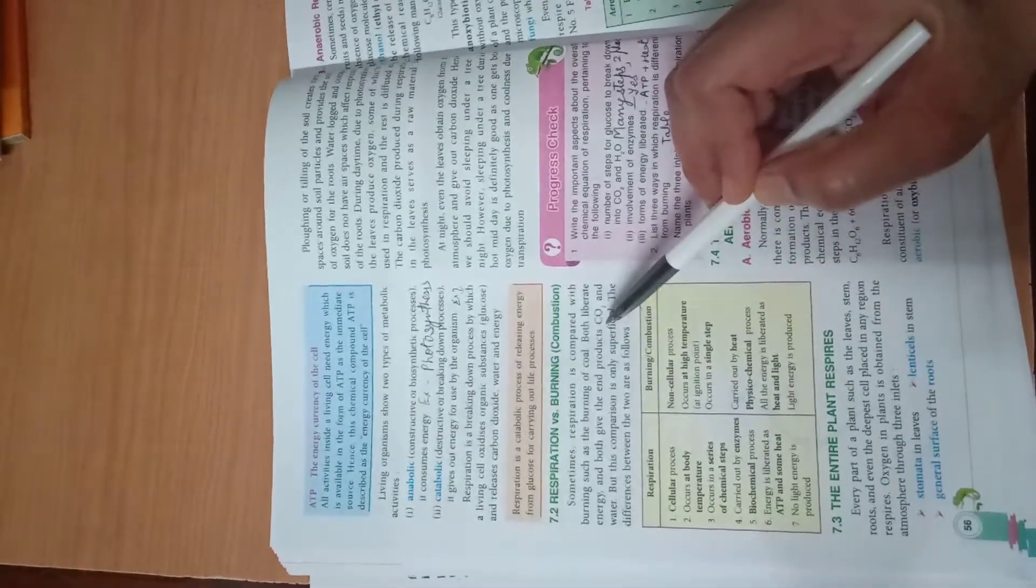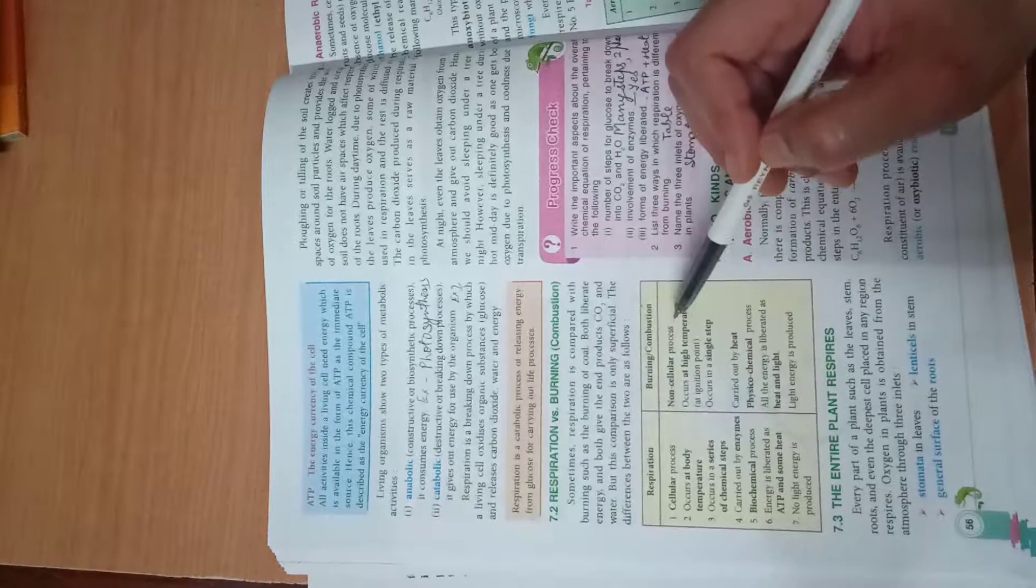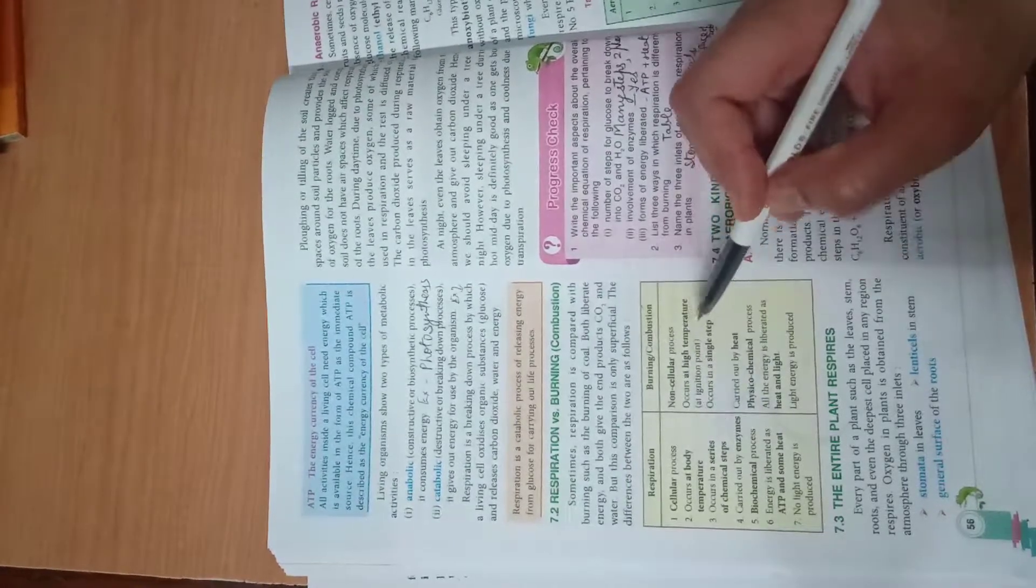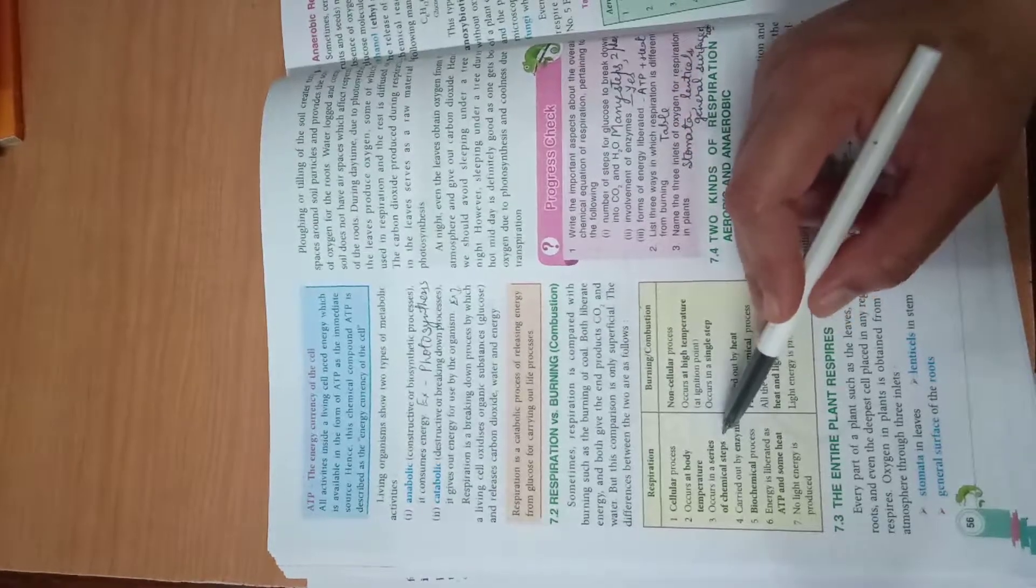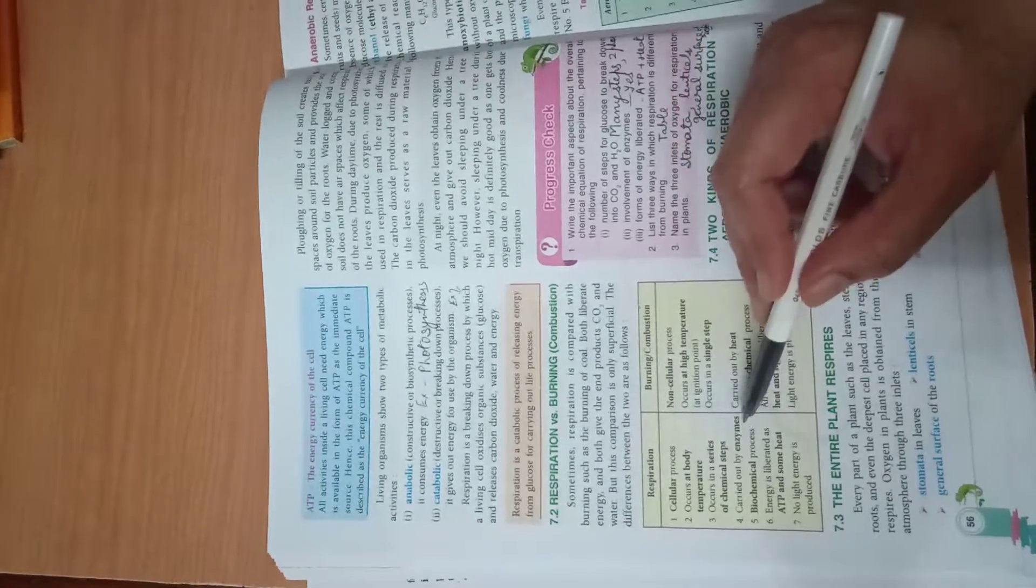The differences are: respiration is cellular process while burning is non-cellular; respiration occurs at body temperature while burning occurs at high temperature, ignition temperature; respiration occurs in a series of chemical steps while burning occurs in a single step; it is carried by enzymes while burning occurs under the influence of heat.